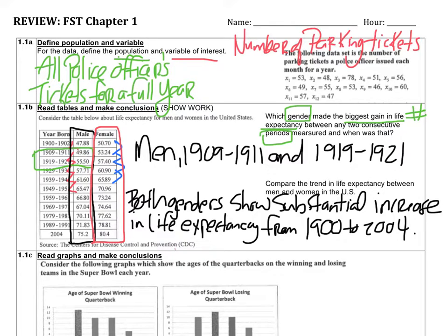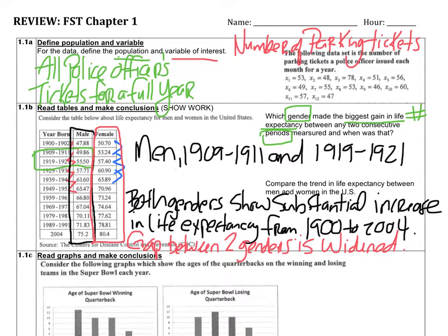Another observation is to compare the two genders across time periods rather than just within each gender. In the early years, the gap between males and females is roughly three years. As we get into the higher years closer to 2004, the gap actually gets a little bigger — almost a five-year time spread. So it's notable that the gap between the two genders has also widened over time.